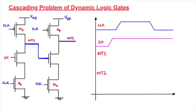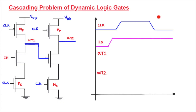A small recap before we start with the cascading problem. The dynamic CMOS design has one pre-charge transistor and one evaluation transistor. When clock is 0 it enters the pre-charge phase, and when clock is 1 it enters the evaluation phase. During evaluation, the inputs must be high for the NMOS transistors to turn on, since NMOS turns on only for a high input. When inputs are high and clock equals 1, the output transition will be reflected at that point.